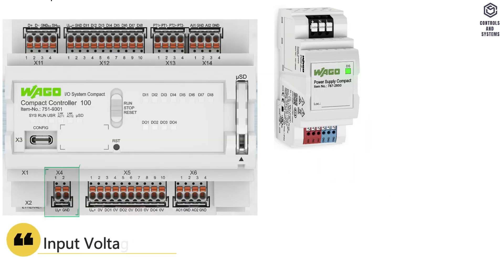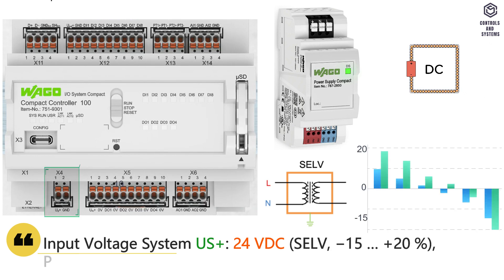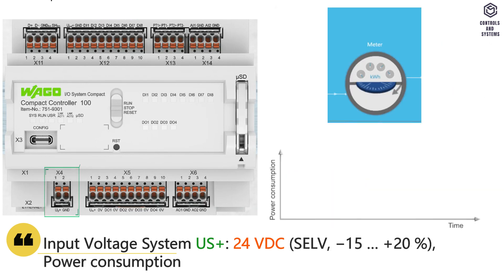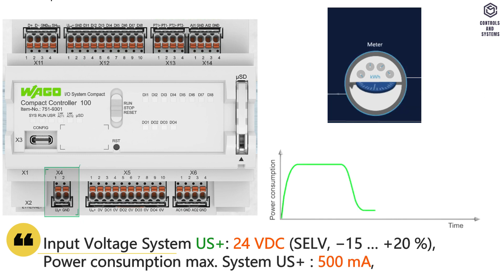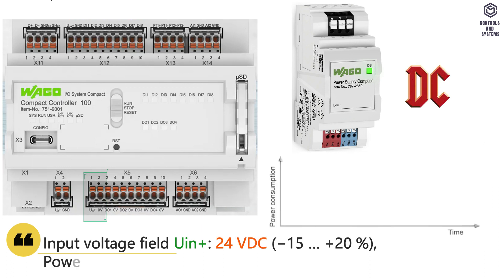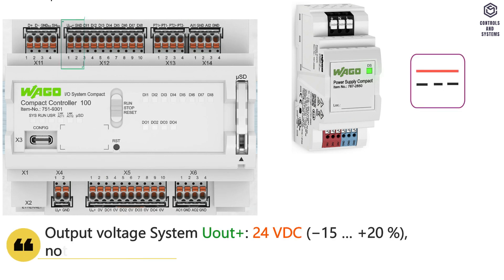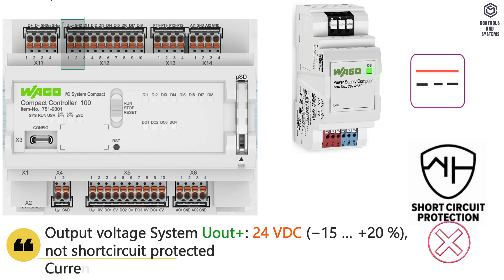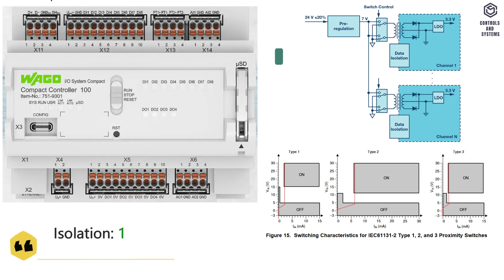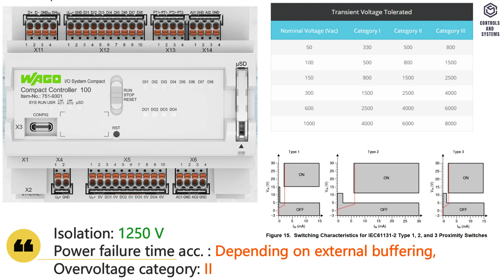Electrical data: Input voltage of system is 24V DC, SELV, -15% to +20%. Power consumption of system is maximum 500 mA. Input voltage of field is 24V DC. Power consumption of field is maximum 2 A. Output voltage of system is 24V DC, not short-circuit protected. Current output of system is maximum 200 mA. Power failure time is depending on external buffering. Overvoltage category is 2.